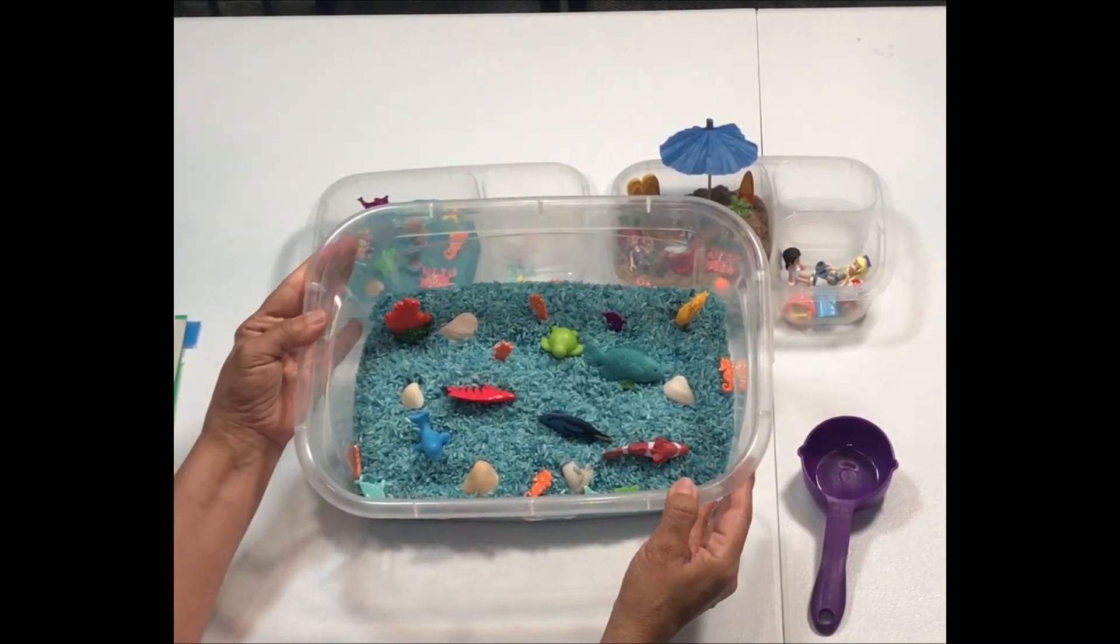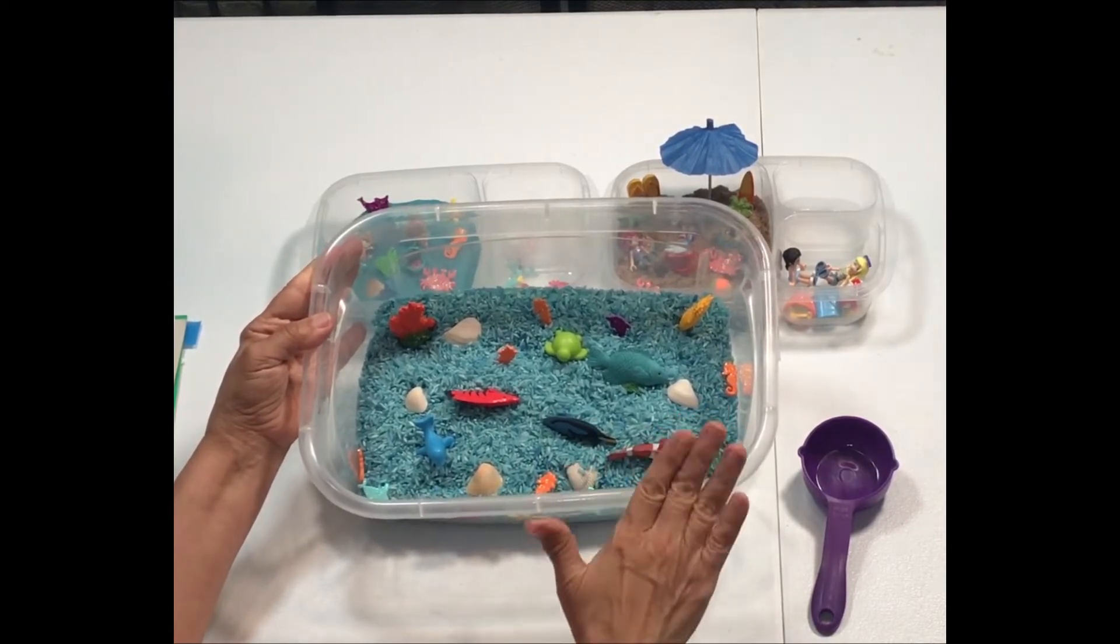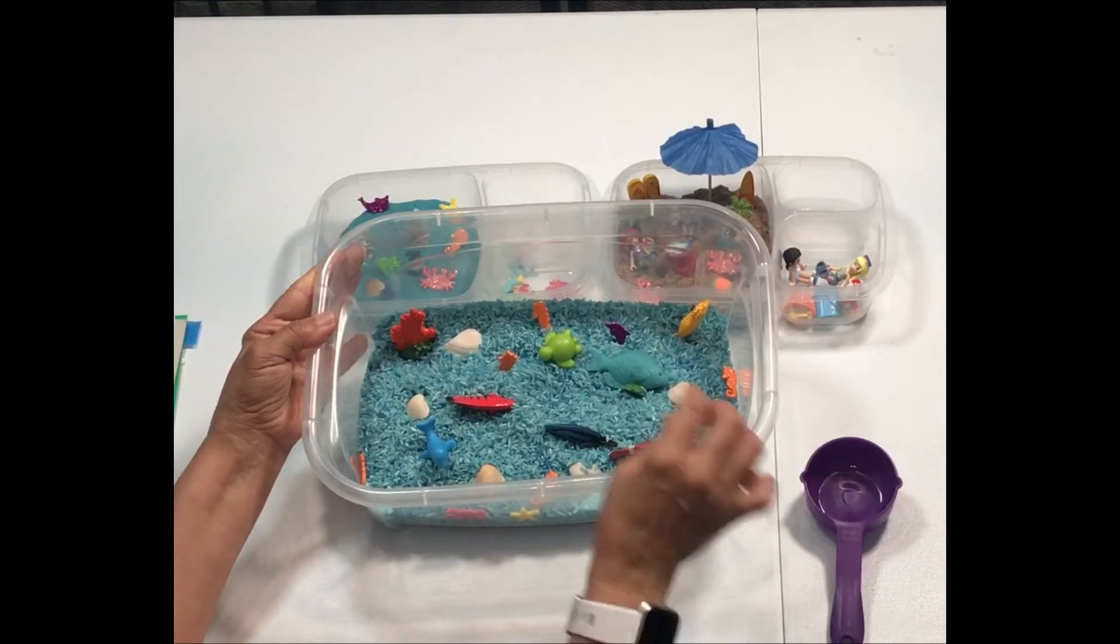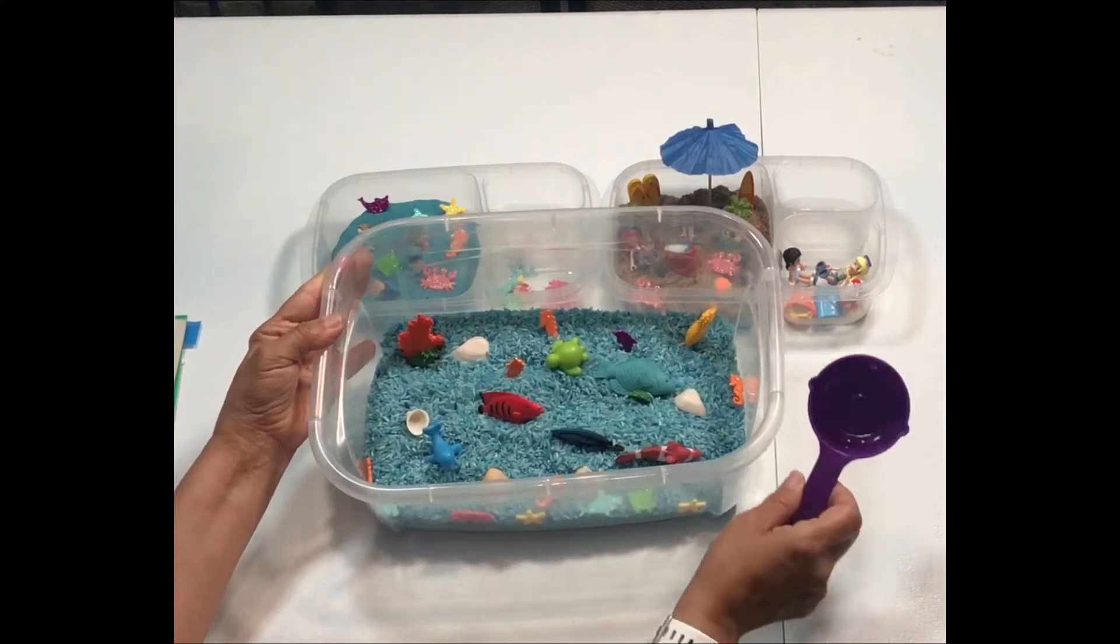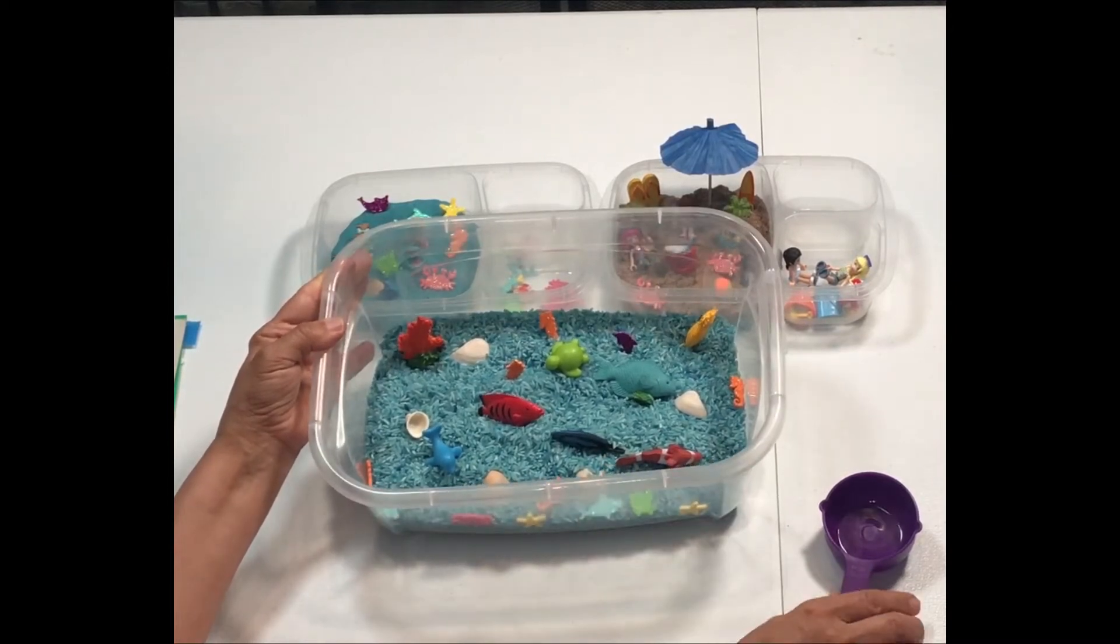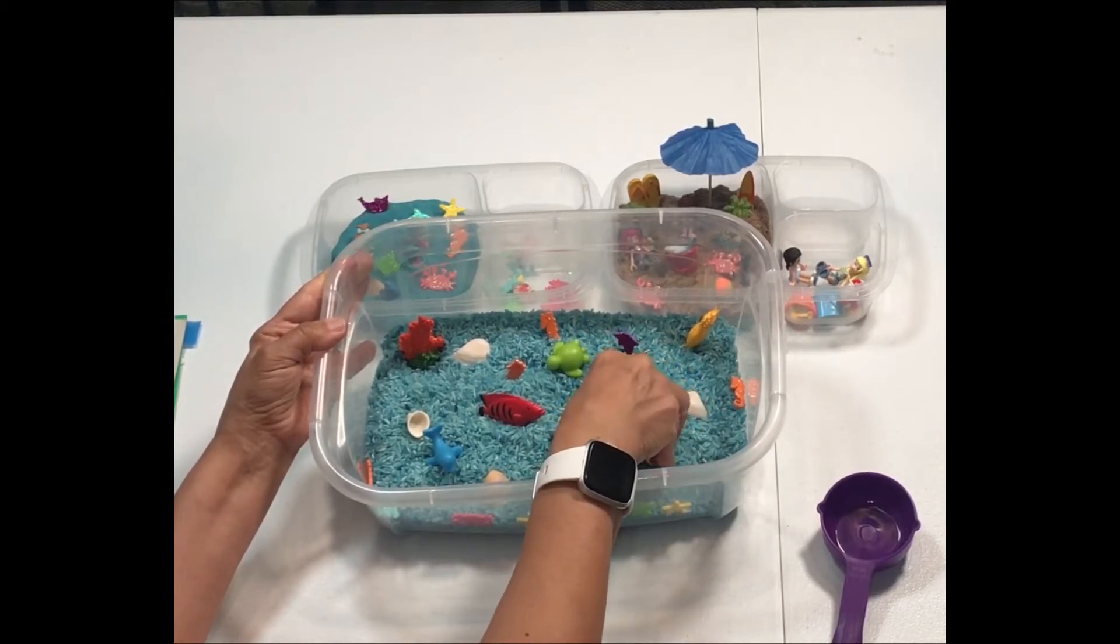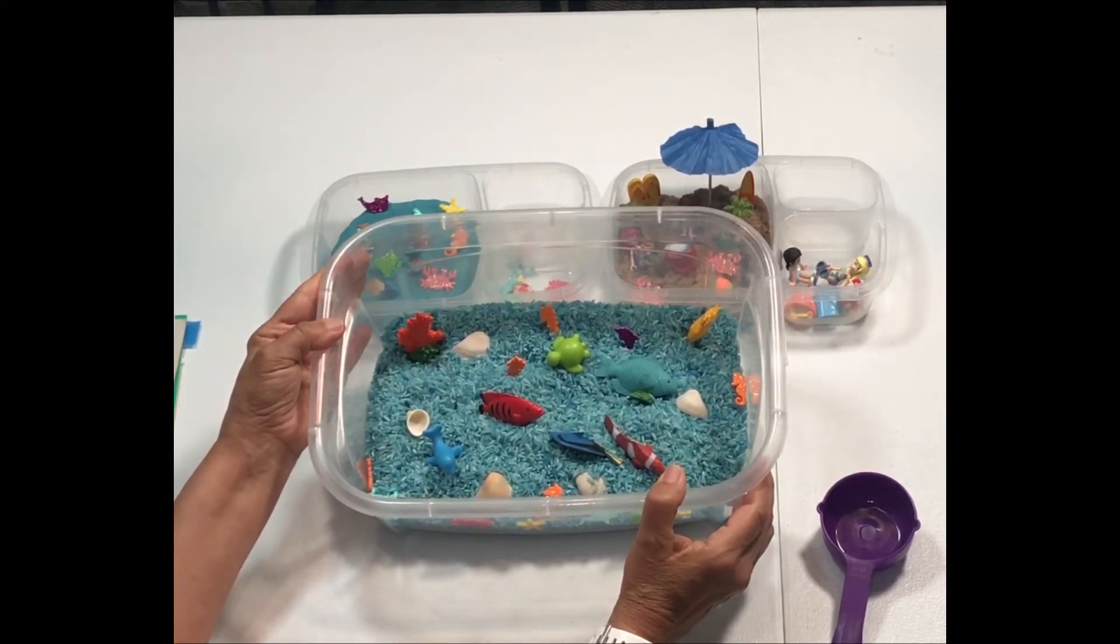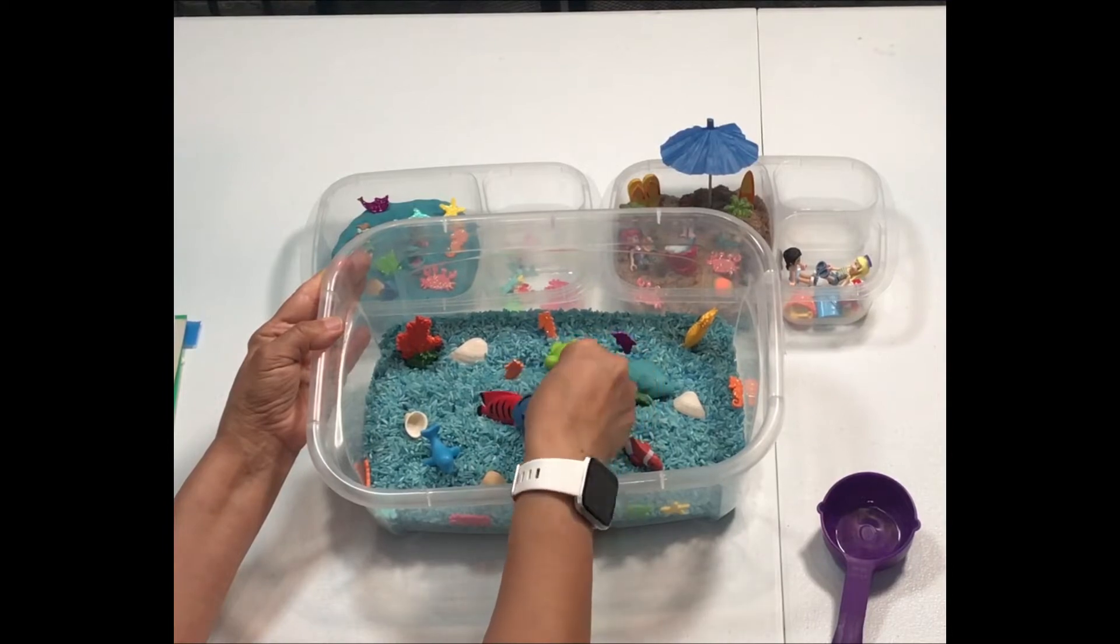I always like to include some type of a sensory bin. These are very inexpensive. For this one I'm using a shoe box. I colored some rice, some blue rice, using some of the sea animals and seashells. Playing with sensory bins helps with cognitive development as your child fills and scoops as he hides and seeks the toys in the bin. Sensory play is perfect for boosting fine motor skills as children grasp and play with whatever you put in their sensory bin.